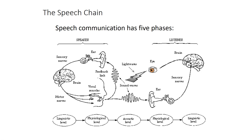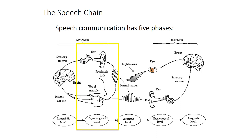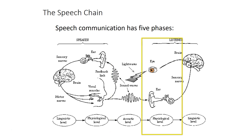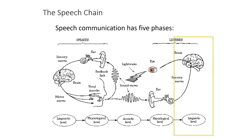Going through the chain of processes involved in speech communication starts with the speaker using their brain to generate a linguistic message they want to convey. That message gets converted into a variety of physiological activities—mostly speech articulation—which results in sound being generated, involving acoustics. Those sound waves are heard by the listener and monitored by the speaker as feedback. When the listener hears the speech sounds and watches the articulation, information is converted back into a physiological representation and then recoded into the linguistic message being conveyed.